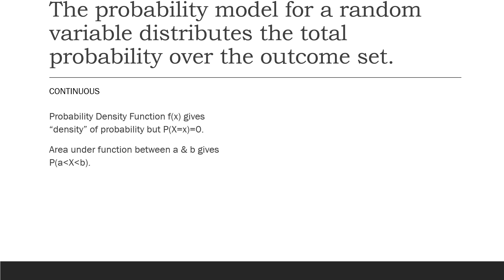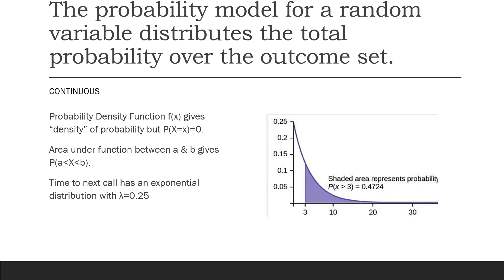The area under the density function between two values a and b is used to find the probability that the random variable x takes a value in that range. For example, if we're looking at the time to the next call having an exponential distribution with lambda equal to 0.25, that gives us a density curve. If we wanted to find the probability that the time until the next call is more than three minutes, we find the area under this curve shaded purple to the right of three, and that represents the probability that the time until the next call is greater than three minutes.